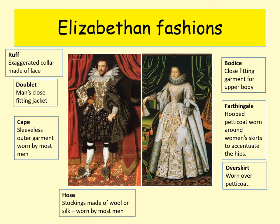Another thing the gentry liked to spend money on was fashions. You can see here some typical Elizabethan fashion for women. The farthingale is a hooped petticoat worn around a woman's skirt to accentuate the hips. There's the overskirt, worn over the petticoat; a bodice, a close-fitting garment for the upper body; and the ruff, an exaggerated collar made of lace. The doublet is a very distinctive Elizabethan jacket. Men also wore a cape, which was very fashionable, and hose — stockings that most men would wear.